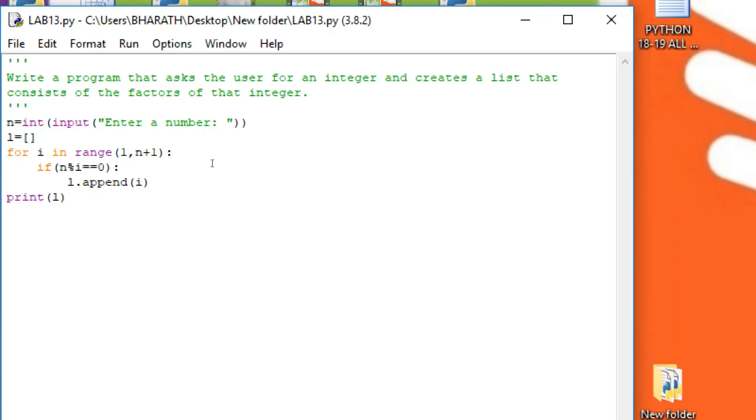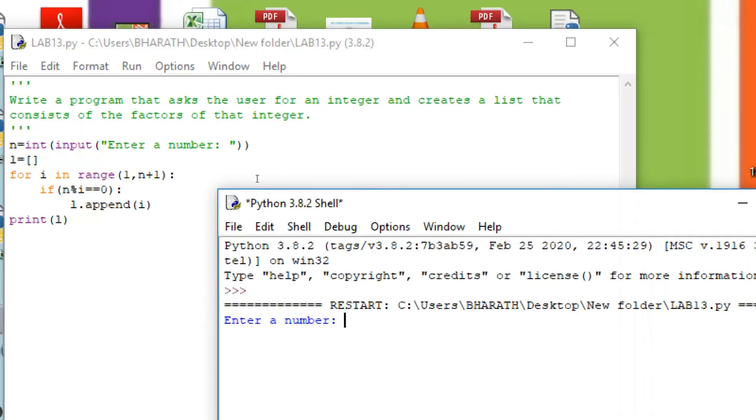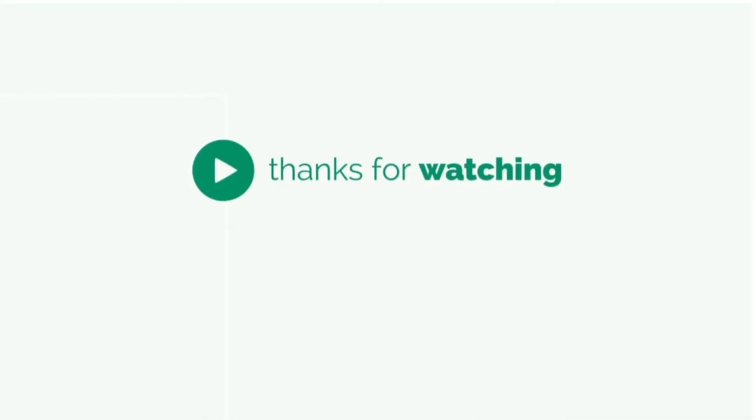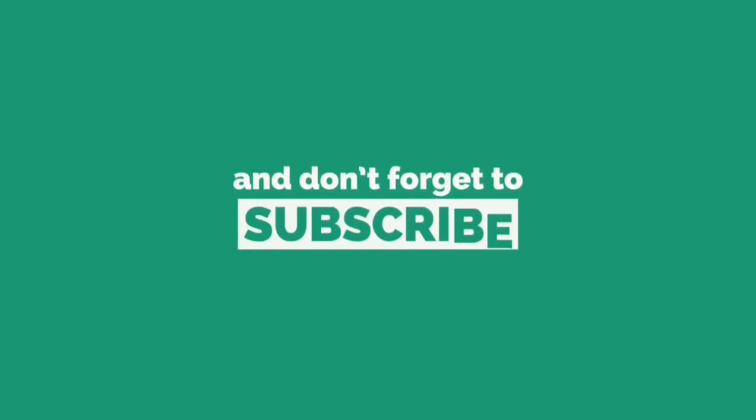Now we are going to see the execution of the program. So find the factors. So input 14. So these are the factors: 1, 2, 7, 14.